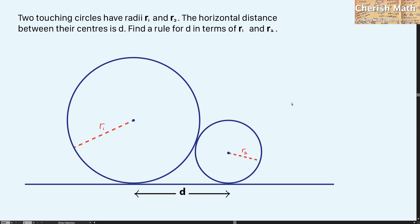Say hi from Cherish Math. This is the question. Two touching circles have radii R1 and R2. The horizontal distance between their centers is D. Find a rule for D in terms of R1 and R2.